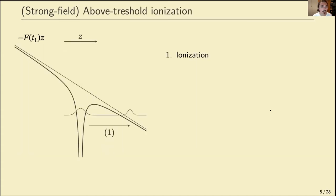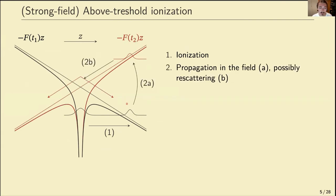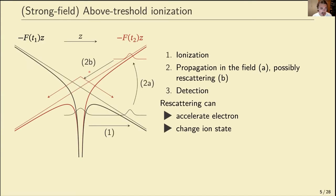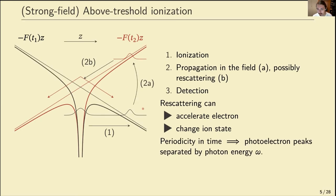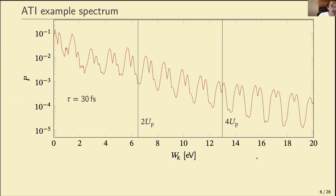In above-threshold ionization (ATI), a strong laser field tilts the atomic potential to form a barrier, through which valence electrons tunnel. The resulting continuum wave packet can be accelerated by the field, return to the parent ion, and rescatter. Rescattering can accelerate the electron further but can also change the ion state. The periodicity of this process produces photoelectron peaks separated by the photon energy ω.